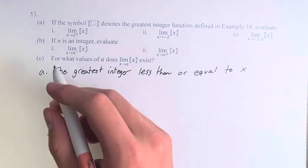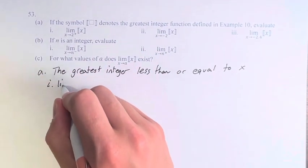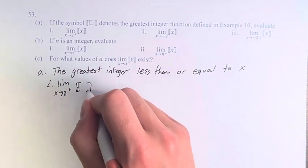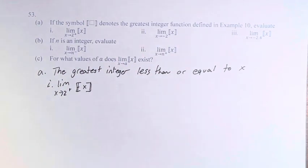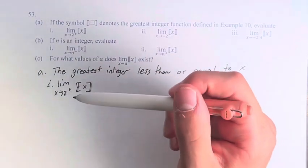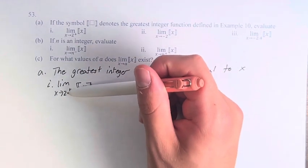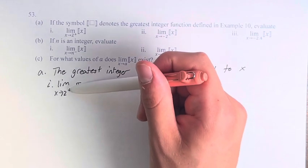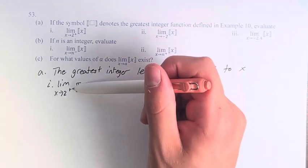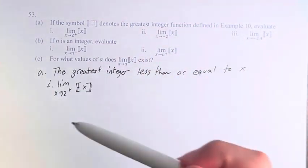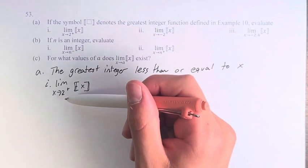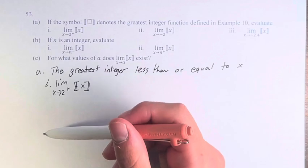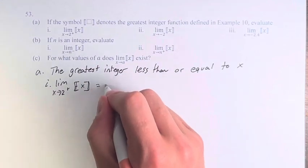Here we are taking the limit as x approaches 2 from the right of x within this function. That means we're taking values of x that are approaching 2, and from the right means they're greater than 2 — very slightly greater, getting closer and closer to 2 but still greater than 2. Which means the greatest integer less than or equal to them is 2. Therefore this limit is equal to 2.